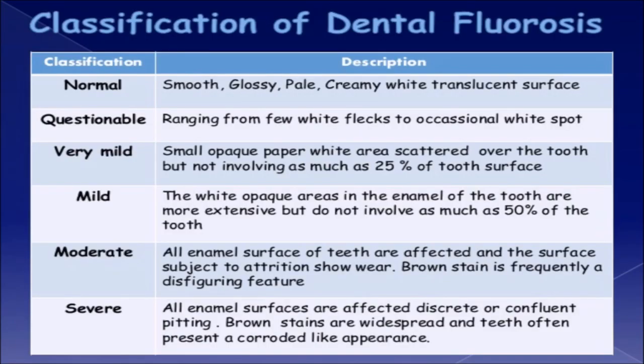Classification of Dental Fluorosis: Normal — smooth, glossy, pale, creamy white translucent surface. Questionable — ranging from a few white flecks to occasional white spots. Very Mild — small opaque paper-white areas scattered over the tooth, not involving as much as 25% of the tooth surface.